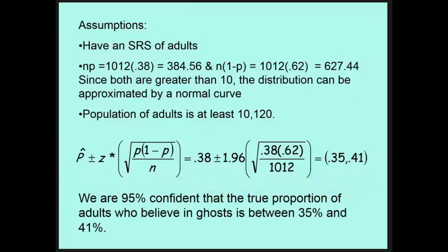The last thing after we do the calculations is to write it out in context. So what this all means is that we are 95% confident that the true proportion of adults who believe in ghosts is between 35% and 41%. So even though the sample said 38, based on the fact that they talked to 1,012 people, the real population proportion is somewhere between 35 and 41. Alright, so let's look at a different example.